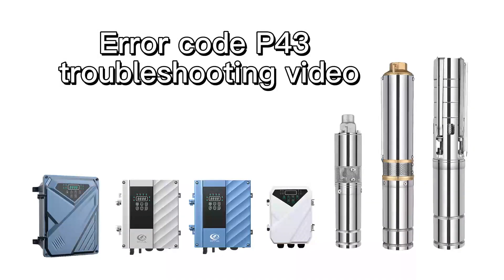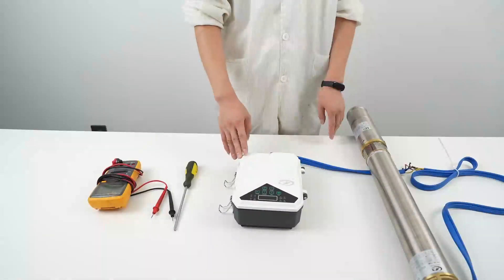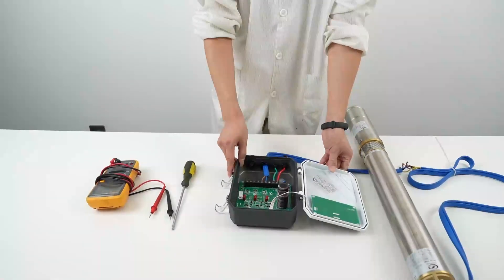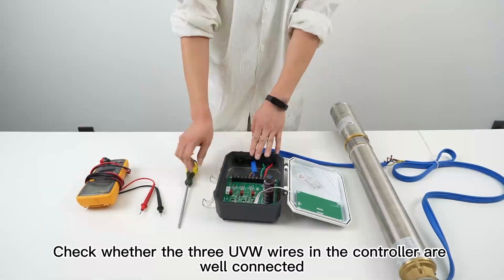Error code P43 troubleshooting. Video tools: multimeter and screwdriver. Open the controller. Check whether the three UVW wires in the controller are well connected.